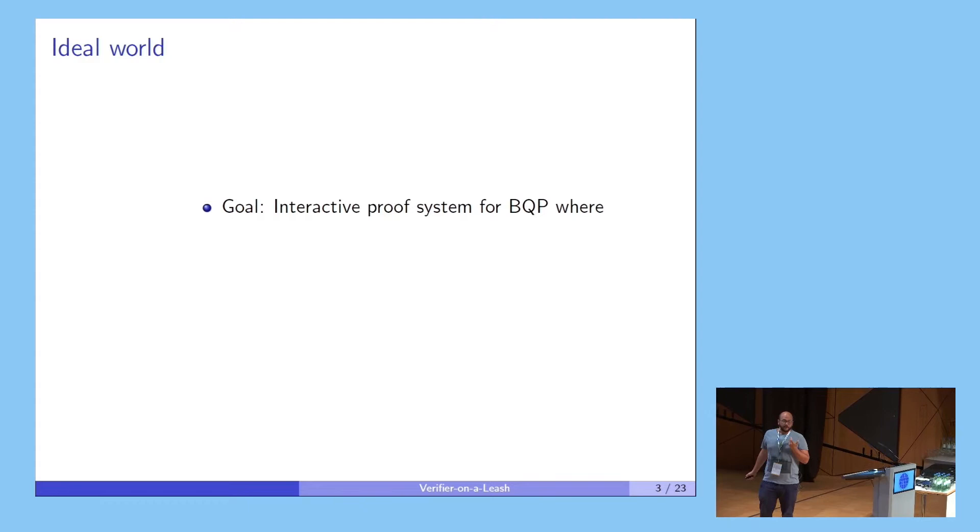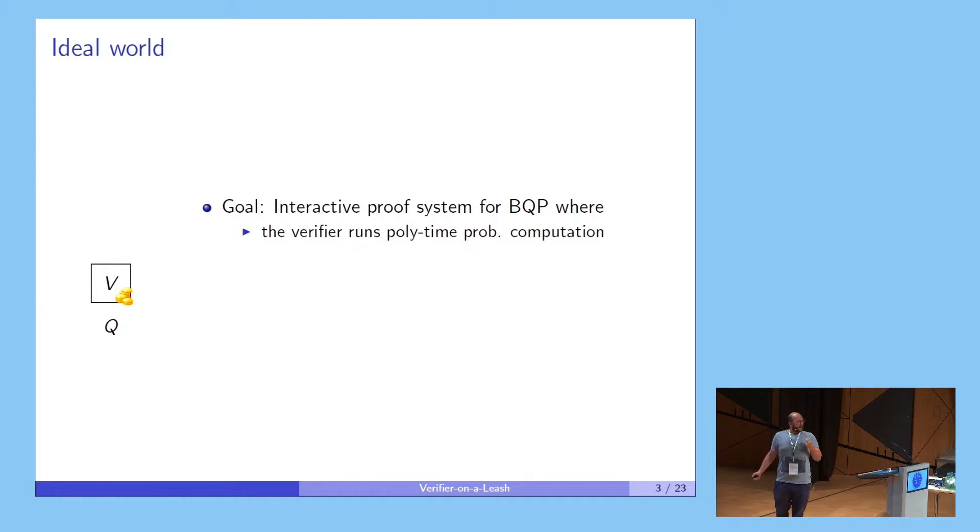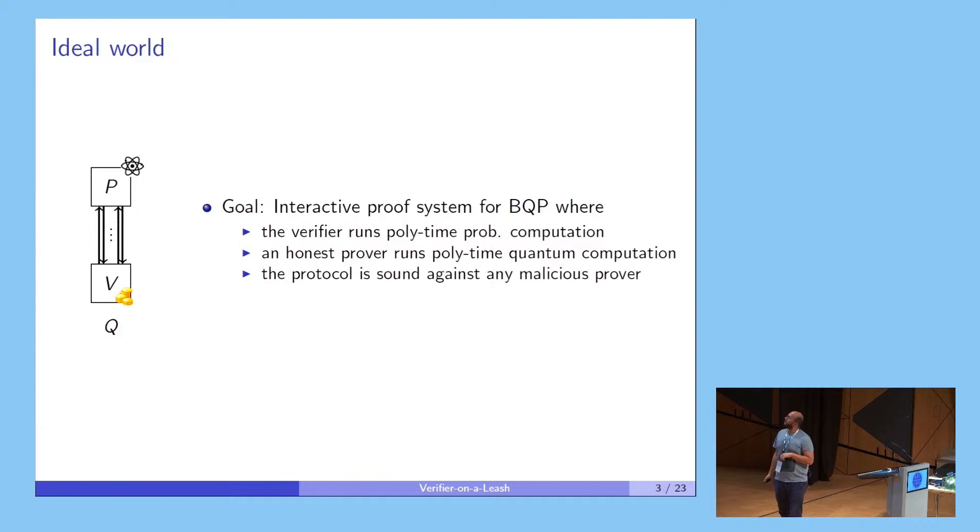Ideally, what you would like to do is have an interactive proof system for BQP, or the class of polynomial time quantum computation, where the verifier in this interactive proof system is completely classical and she delegates her quantum computation to a quantum server that, in the honest case, would only need polynomial time quantum computation. We'd like this protocol to be sound against any malicious prover, so we'd like statistical soundness. And ideally, the verifier should not have to tell the prover what her circuit is, so she wants to do it in a blind way.